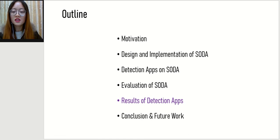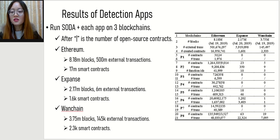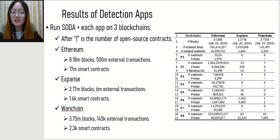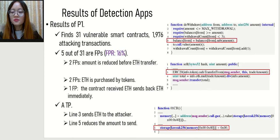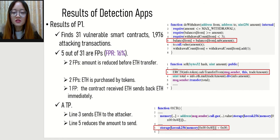I will present the results of running 8 apps on three blockchains. For Ethereum, 8 million blocks, 500 million external transactions, and 17 million smart contracts are analyzed. For XNOS and OneChain, we also analyzed many smart contracts. App 1 (P1) finds 31 valuable smart contracts with two suspicious attacking transactions. After manual investigation, five are false positives, giving a false positive rate of 16%. The figure shows a true positive where a contract sends ETH to the attacker and the amount is reduced after ETH transfer, allowing the attacker to steal ETH by re-entrancy.